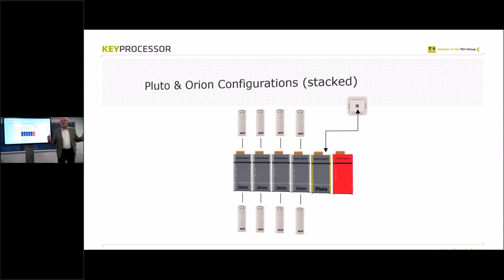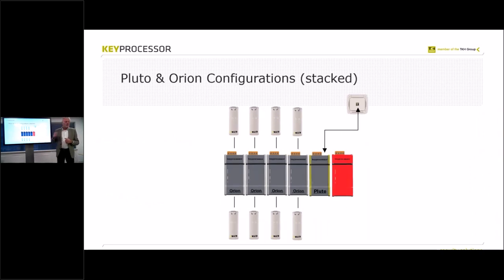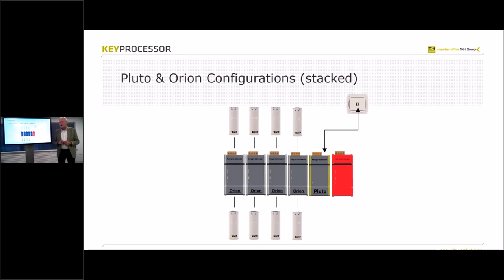This will be familiar for everybody — you see the Pluto, four Orions, and four readers. This is one of the possibilities to build up your access control system. Forget the solar for now, that will come in 2019. This is a way to connect your readers; most of them are RS485 connected on the Orion.